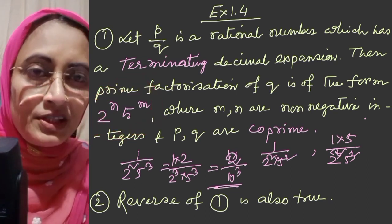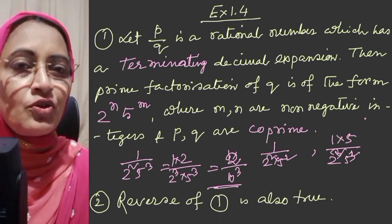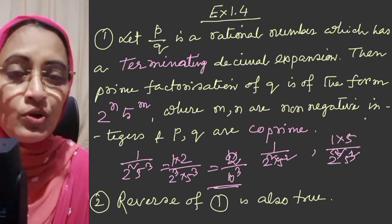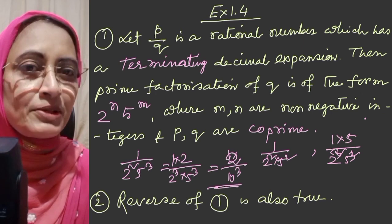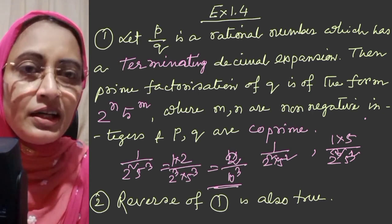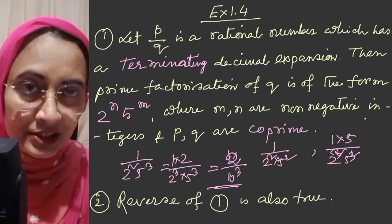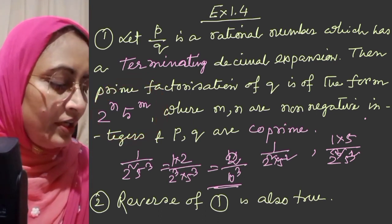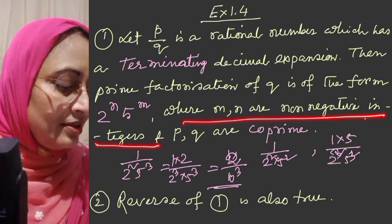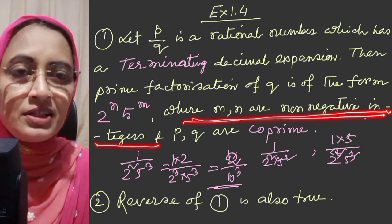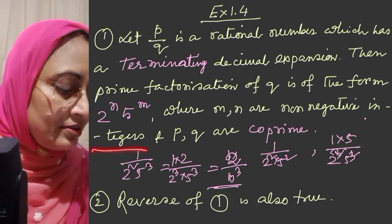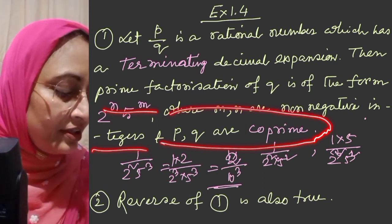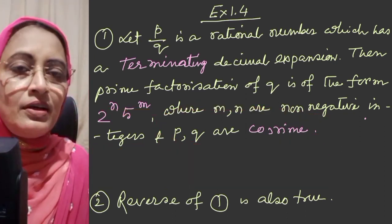Terminating decimal expansion means when we divide a fraction, if we get remainder 0, the division terminates. The denominator must be of the form 2 to the power n into 5 to the power m, where m and n are non-negative integers — that means 0 is also included. Also, P and Q must be coprime, meaning no common factor between them.